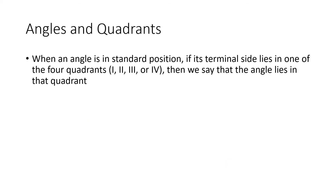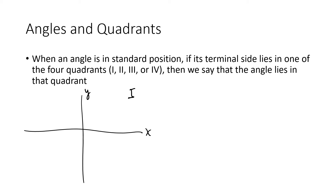When we have an angle in standard position, if the terminal side lies in one of the quadrants — quadrant one, two, three, or four — we say that the angle lies in that quadrant. The quadrants are numbered counterclockwise: quadrant one is where x and y are both positive, then quadrant two, quadrant three in the bottom left, and quadrant four in the bottom right. So if we had an angle whose terminal side is in quadrant two, we would say that angle is in quadrant two. Again, there are lots of different rotations that can be represented by the same pair of rays.